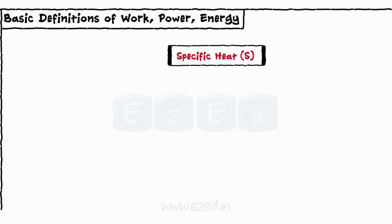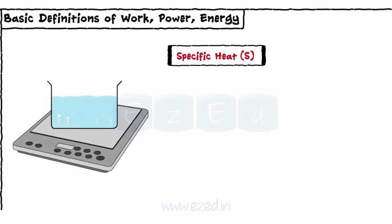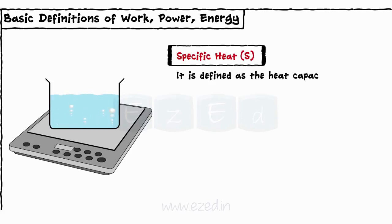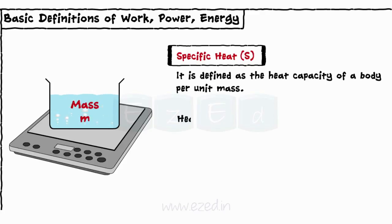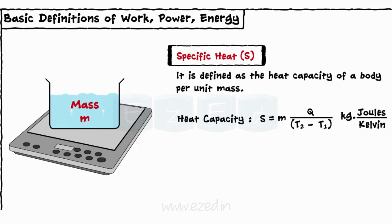Specific heat S is defined as the heat capacity of a body per unit mass. If the mass of the body is M, then its specific heat is given as S equals Q upon M into (T2 minus T1). Thus, heat supplied can be written as Q equals M into S into (T2 minus T1).